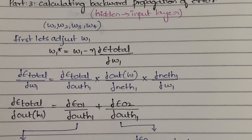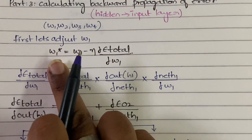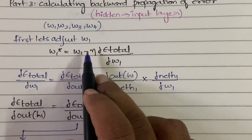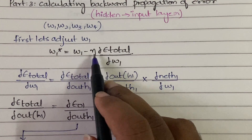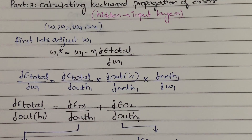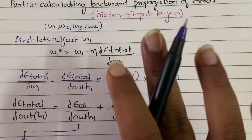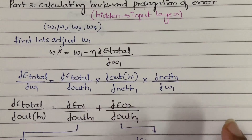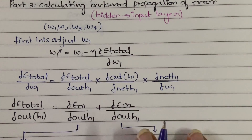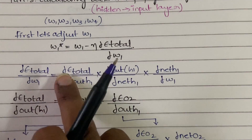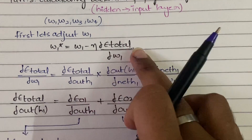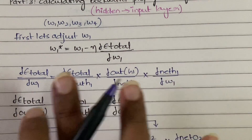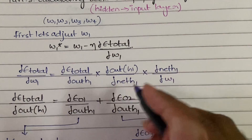What is the formula for modifying w1? The same formula we followed in the previous video for w5. So w1* — the new or modified w1 — will be equal to w1 minus η, where η is the learning rate equal to 0.6 (you can take any value), times dE_total/dw1. How do you calculate dE_total/dw1? By the chain rule: dE_total/d(out_h1) × d(out_h1)/d(net_h1) × d(net_h1)/dw1.